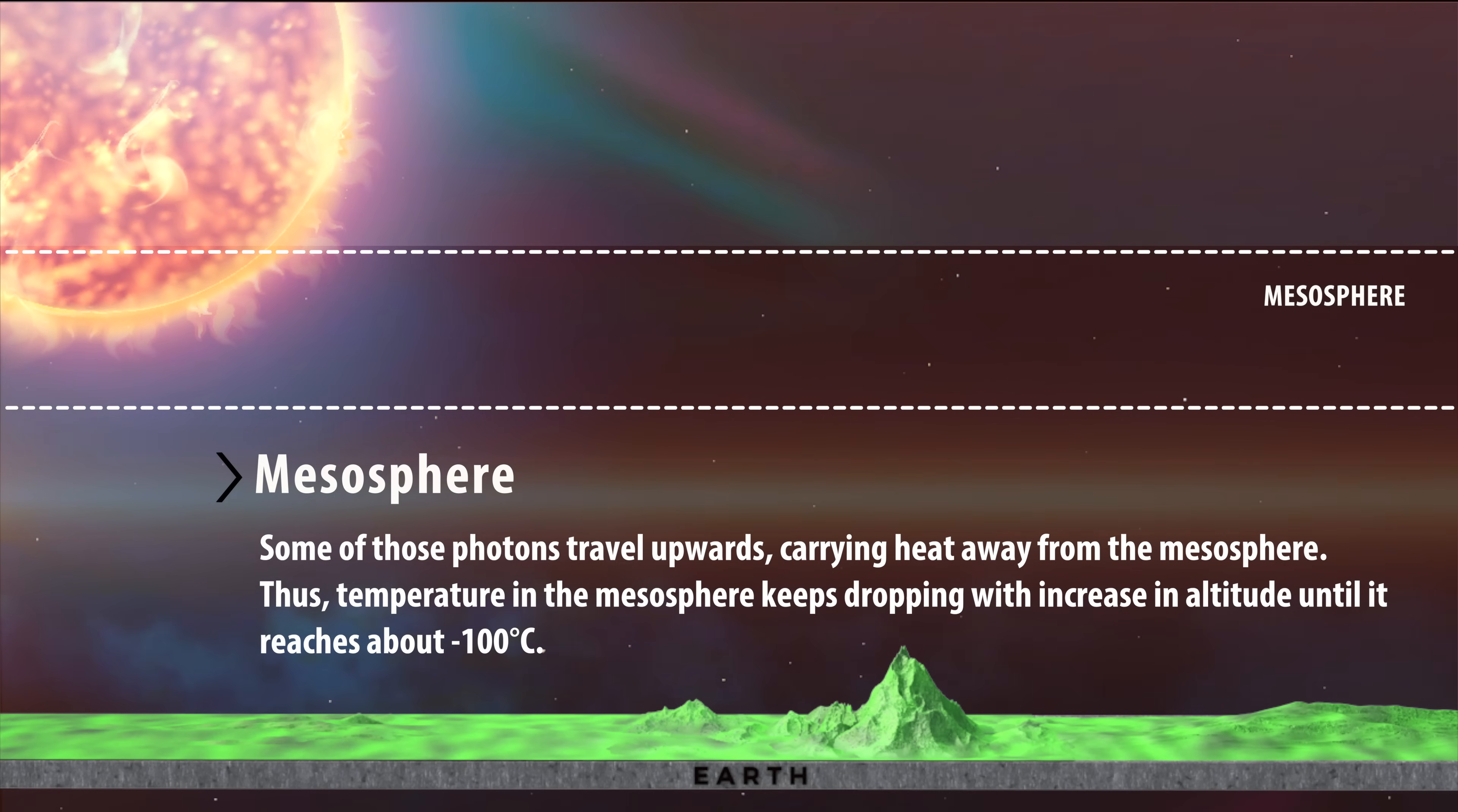Some of those photons travel upwards, carrying heat away from the mesosphere. Thus, temperature in the mesosphere keeps dropping with increase in altitude until it reaches about minus 100 degrees Celsius.